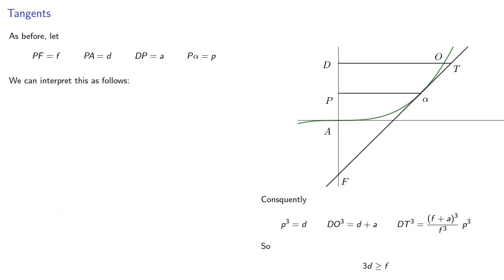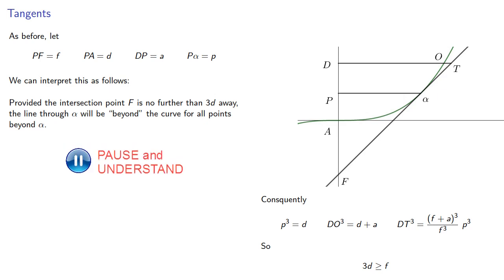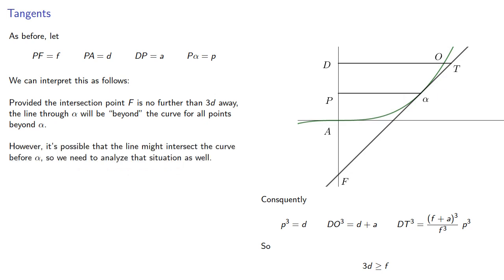We can interpret this result as follows. Provided the intersection point is no further than 3D away, the line through alpha will be beyond the curve for all points beyond alpha. However, it's possible the line might intersect the curve before alpha, so we need to analyze that situation as well.